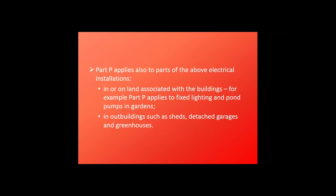Part P does apply to the land associated with the building, so potentially external lighting, pumps and the like, as well as supplies to things like sheds, garages, and greenhouses are all technically covered under the general scope of Part P of the building regulations. Although electrical work is covered under Part P, not all electrical work needs notification to a building control body, and a great deal of what we do in terms of electrics can be carried out without going through a formal process.